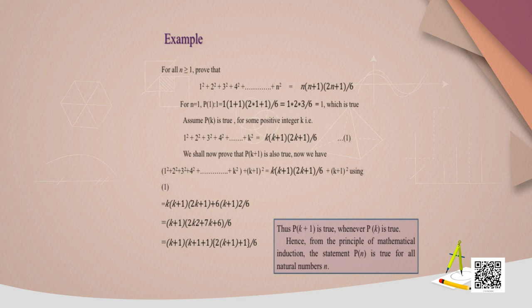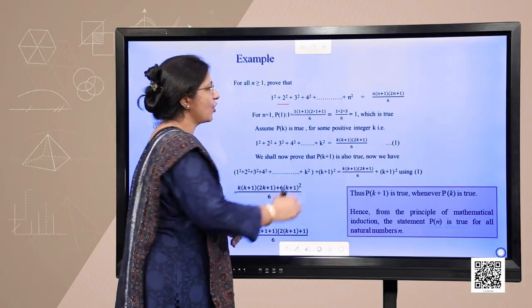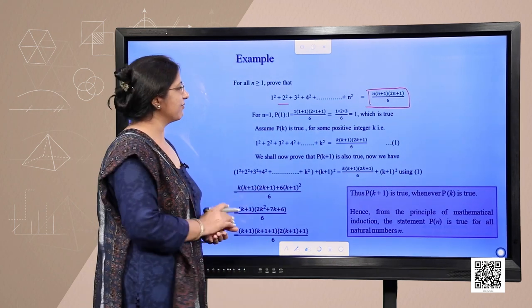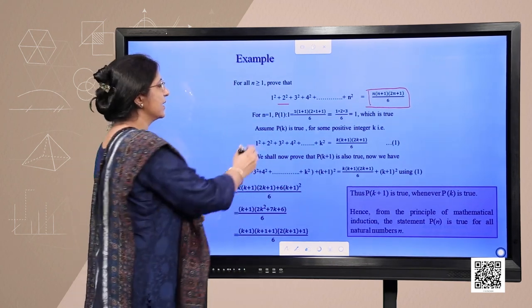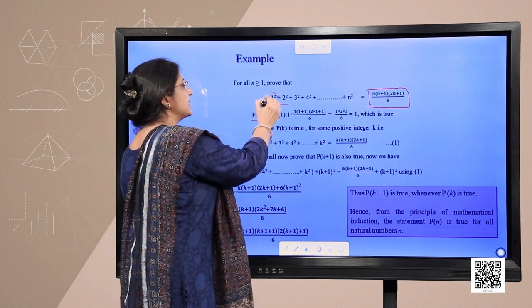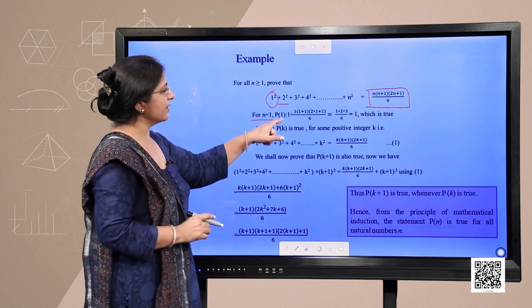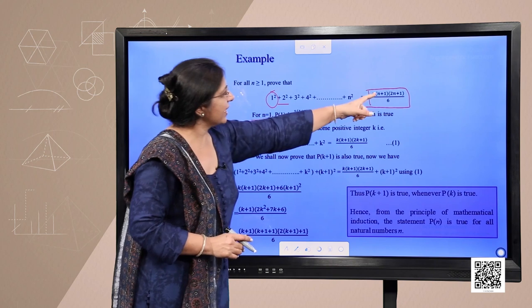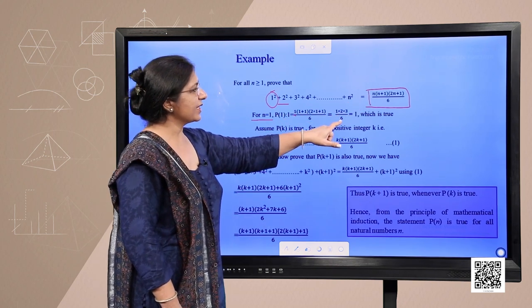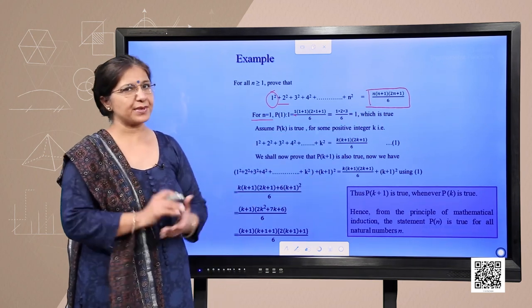Now another example: for n≥0, prove that the sum of squares of natural numbers equals n(n+1)(2n+1)/6. We already know this formula and have been using it. Let us verify it by mathematical induction. Basic step: for n=1, substituting gives 1×2×3/6 = 1, and the left-hand side is 1² = 1. So P(1) is true. We can move further.